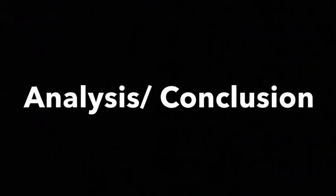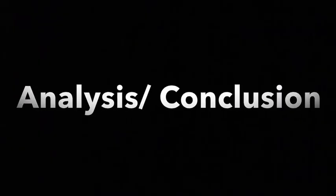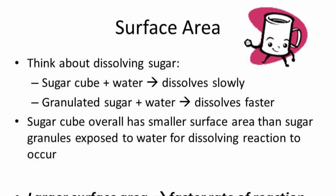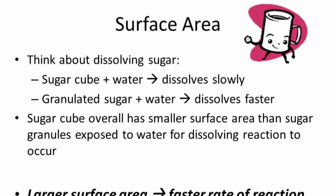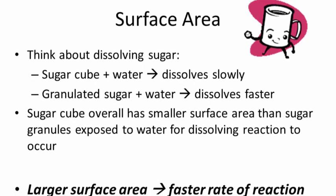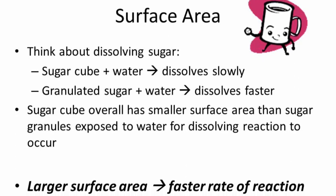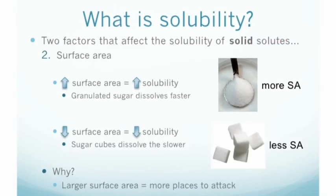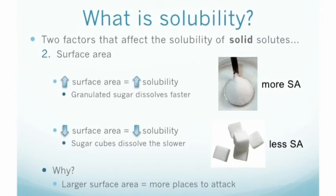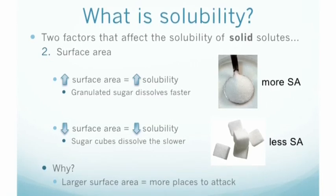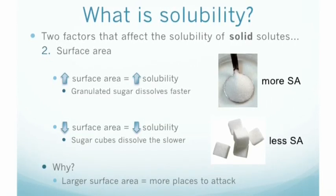The data supported the hypothesis that the larger the surface area of the solute, the shorter the amount of time for complete dissolution. The 2.5 grams of granulated sugar had an average dissolving time of 42 seconds at 40 degrees Celsius. However, the sugar cube, which was also 2.5 grams and had a smaller surface area, had an average dissolving time of 1 minute and 24 seconds. Therefore, the solute with the smaller surface area will take the longest to dissolve.